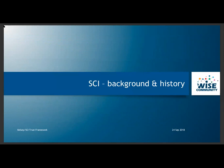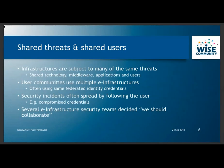Starting with background and history: research infrastructures working together share threats and share users. They are subject to many of the same threats due to shared technology, middleware, applications, and users. User communities, particularly global ones, often use multiple e-infrastructures using the same federated identity credentials. Security incidents tend to spread by following the user, for example via compromised credentials. Several e-infrastructures have been talking to each other for some time, and security teams decided long ago they should collaborate.